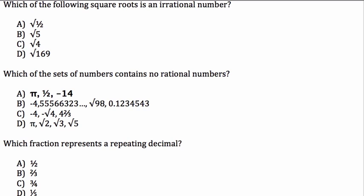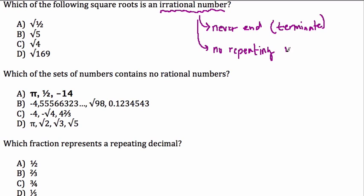Here's what we're going to do. I'm going to start with the first one up here, which says, which of the following square roots is an irrational number? So, irrational numbers are numbers that, when you try to write them as a decimal, they do two things. They never end, they never terminate. That's usually the phrase they use, terminate.